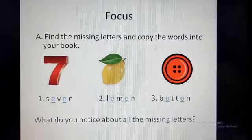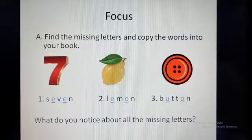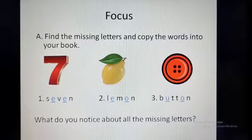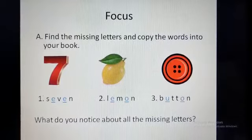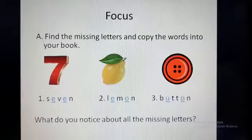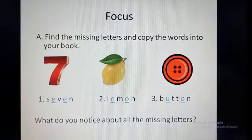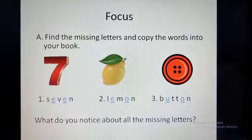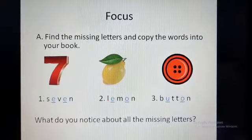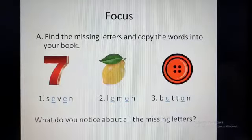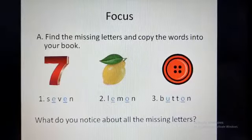Now go to Focus A. Find the missing letters and copy the words into your book. This exercise is very easy. The first one is seven, the second one is lemon, and the third one is button. The question is: what do you notice about all the missing letters? Look at the missing letters carefully and see that all the missing letters are vowels.